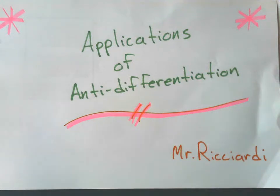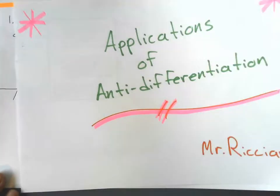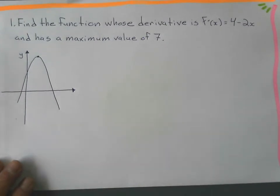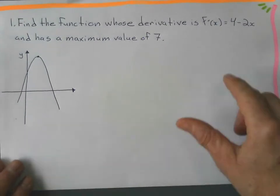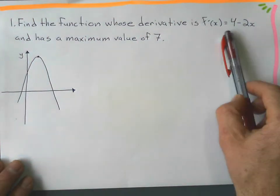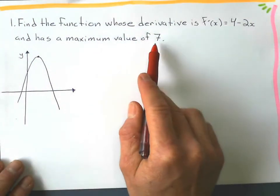In this lesson I'll show you just a couple examples of some applications using anti-differentiation. Let's look at our first example. We have a curve — we want to find the function whose derivative is f'(x) equal to 4 minus 2x and has a maximum value of 7.